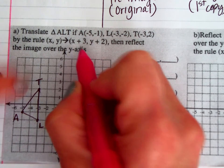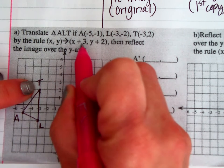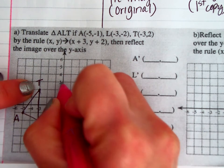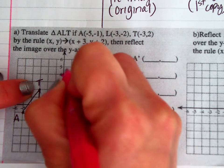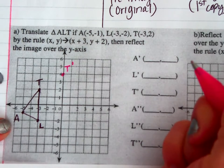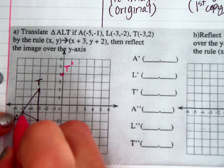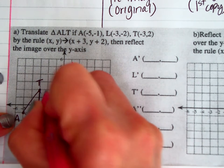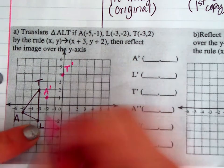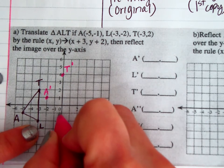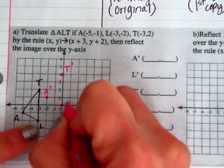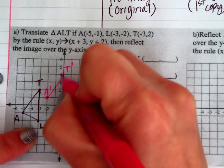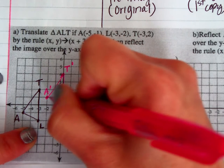Starting from T, I'm going to move right 3 and up 2 — this becomes my T prime. I'll do the same thing for A: move 3 to the right and up 2 — that's now my A prime. And L, the same thing: right 3 and up 2 — that's my L prime. Make sure to use a straight edge to draw your shape.